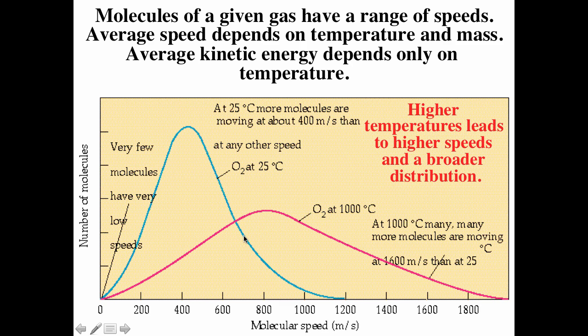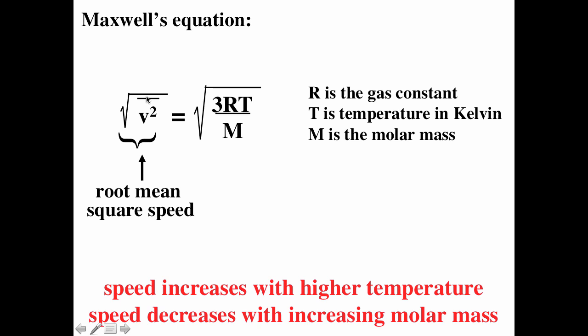Because there's a broad distribution of speeds, what we often talk about is a root mean square speed. V is velocity — you square it, take the average of that, then take the square root. Maxwell's equation says the root mean square speed equals the square root of 3RT/M, where R is the gas constant, T is temperature in Kelvin, and M is the molar mass. The bigger the T, the larger the root mean square speed; the bigger the molar mass, the smaller the root mean square speed.